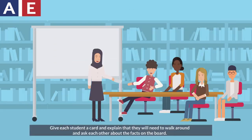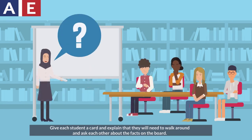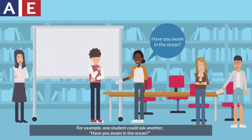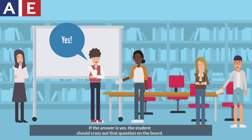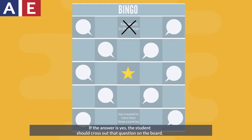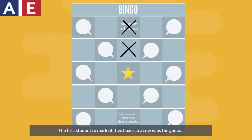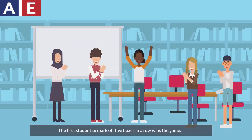Give each student a card and explain that they will need to walk around and ask each other about the facts on the board. For example, one student could ask another, have you swam in the ocean? If the answer is yes, the student should cross out that question on the board. The first student to mark off five boxes in a row wins the game.